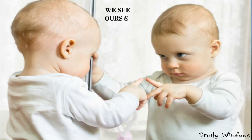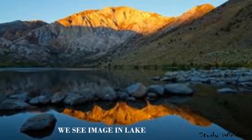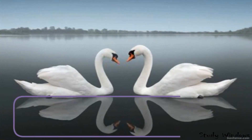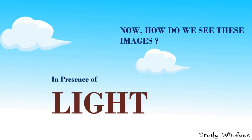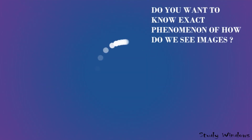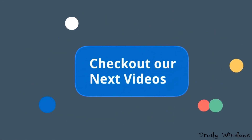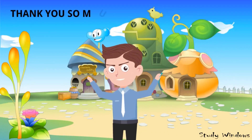We see ourselves in mirrors and see images in lakes — these images form only in the presence of light. If there is no light, no image will be formed. Do you want to know the exact phenomenon of how we see an image? Check out our next video for details. Thank you so much and stay tuned.